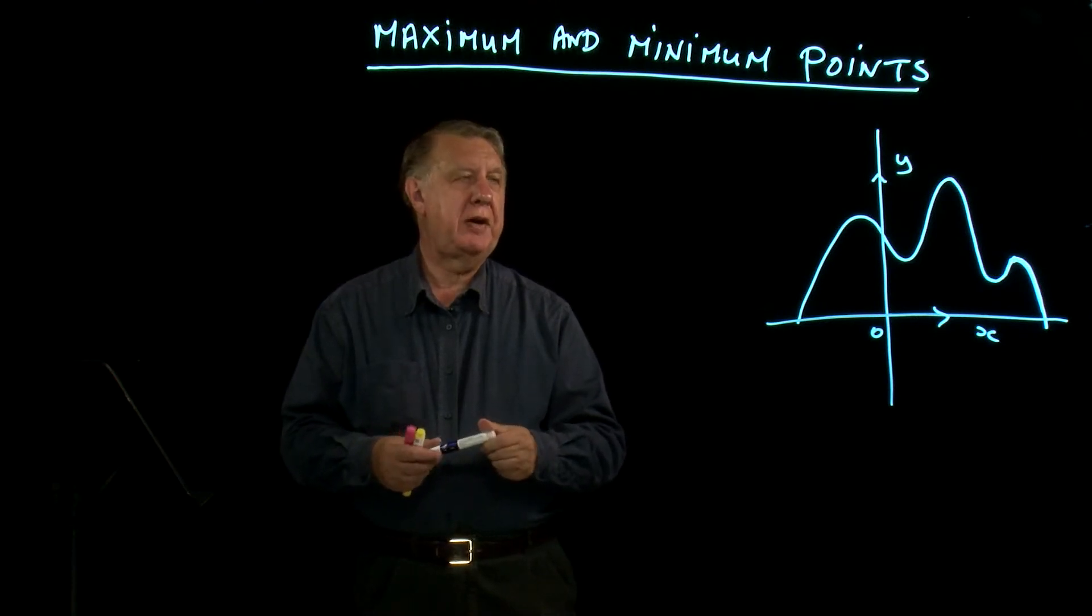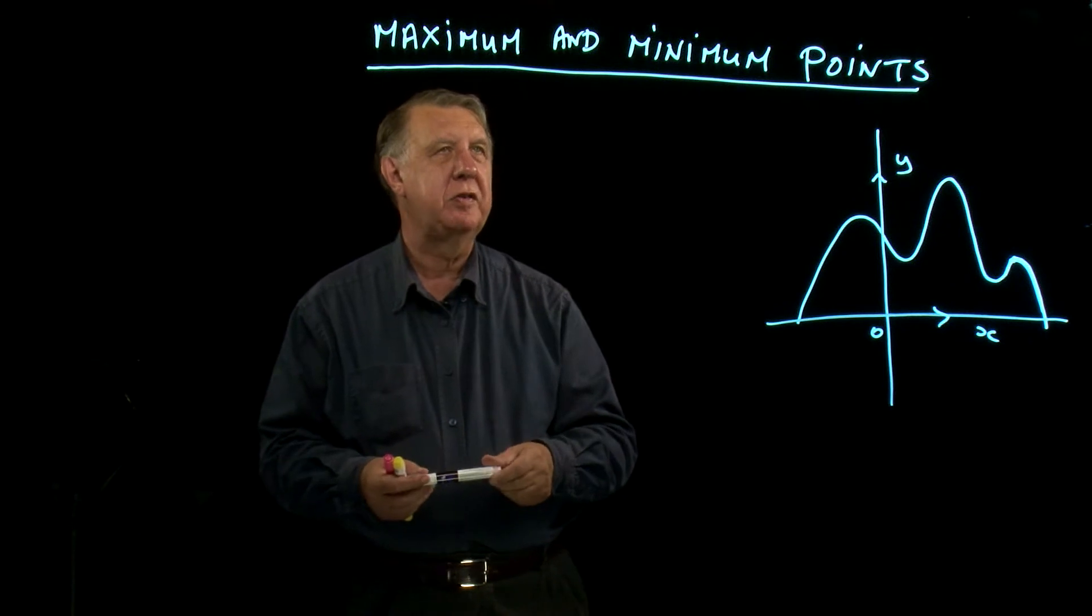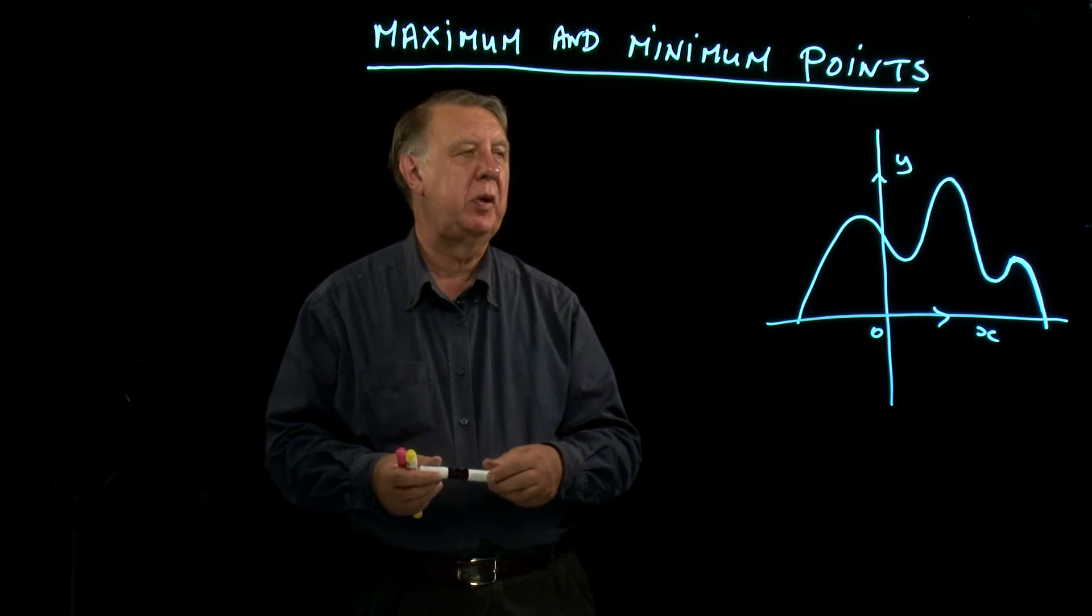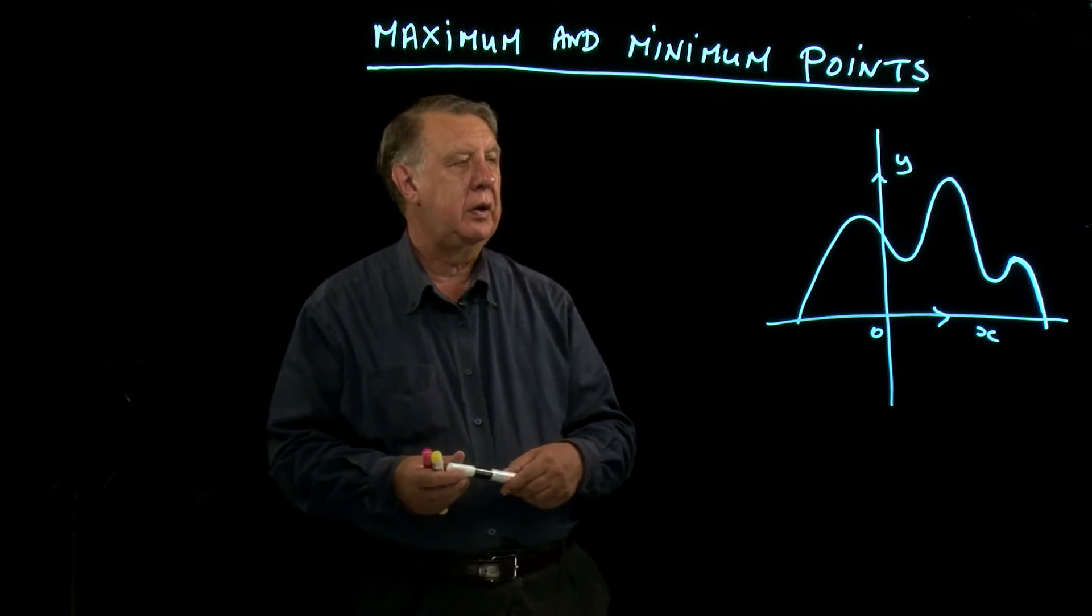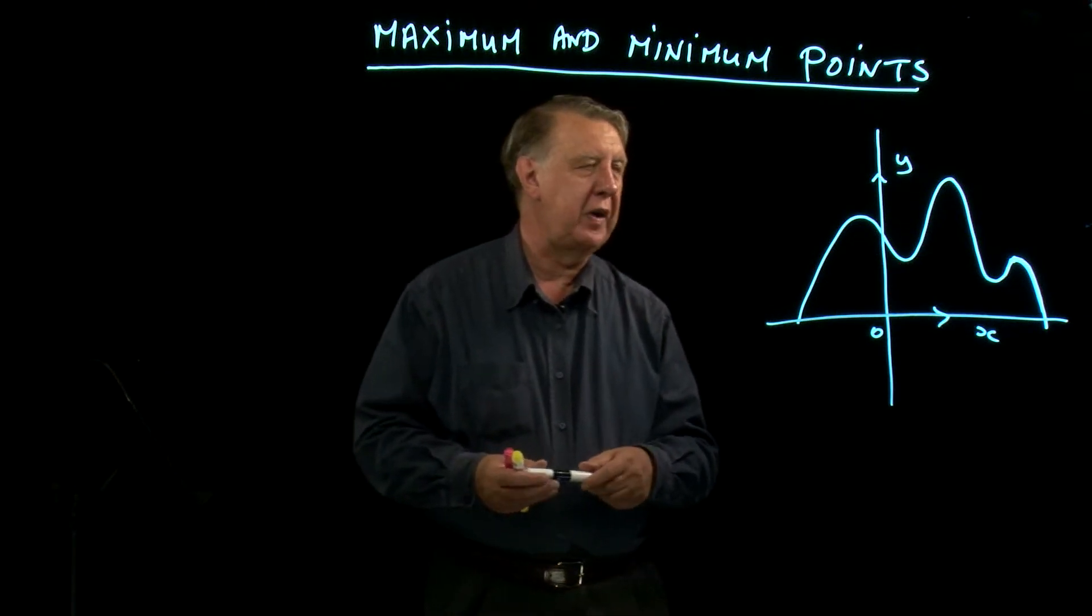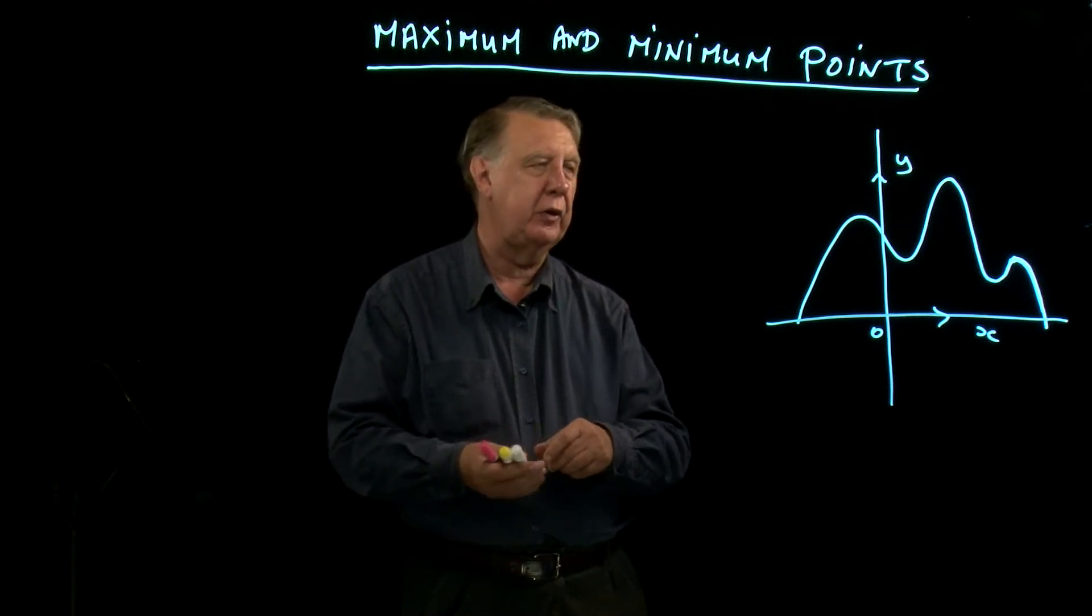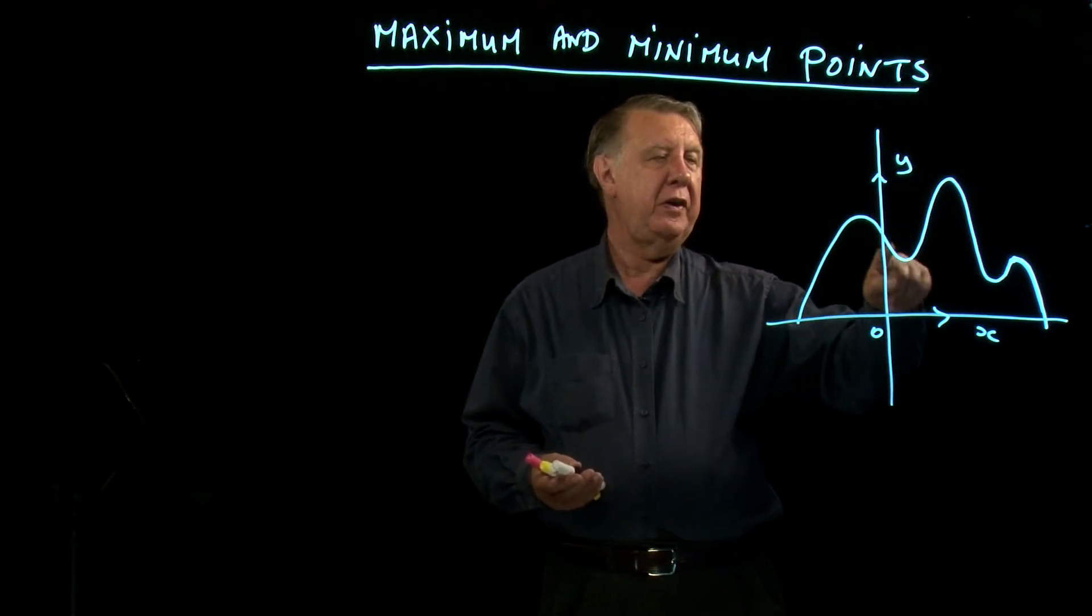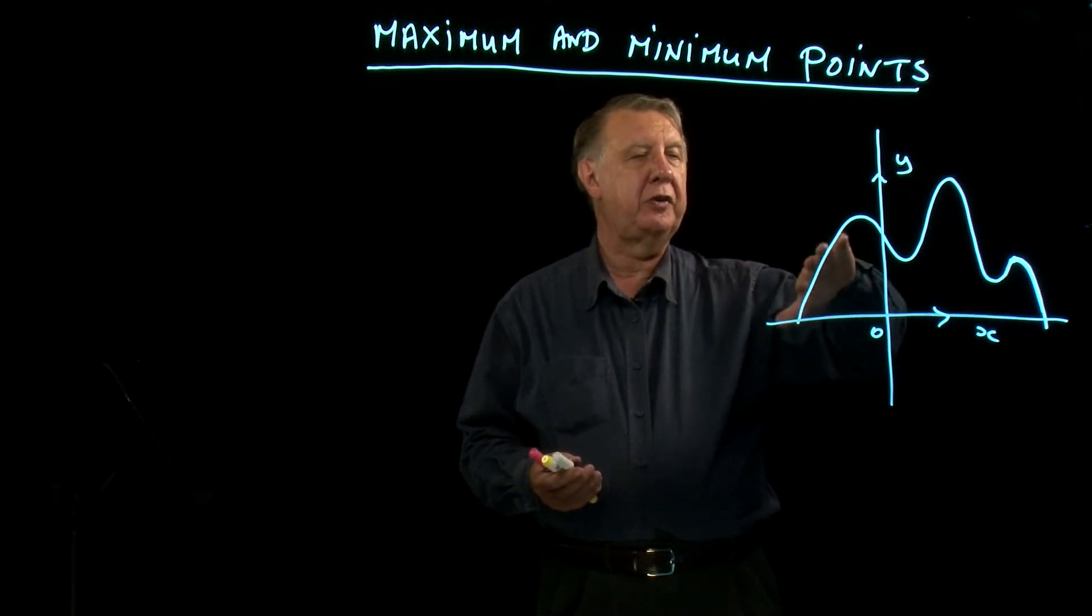We're going to look at some aspects of graphs now, which people usually refer to as maximum and minimum problems and maximum and minimum points on graphs. Here we have quite a complicated graph—you certainly won't get anything as difficult as that, so don't panic—but we just need this to illustrate what's going on. You can see that the graph is changing direction every so often, and we talk about the graph turning.